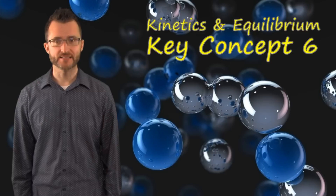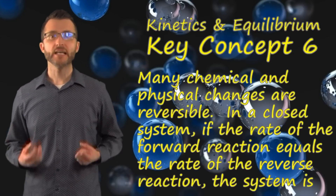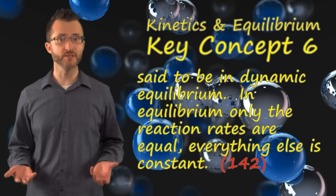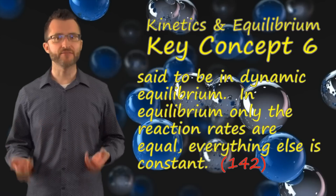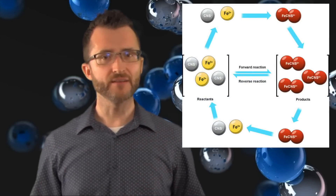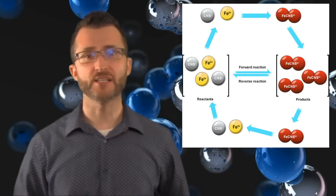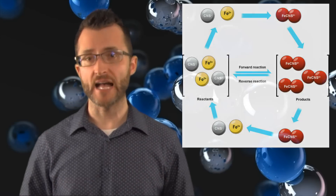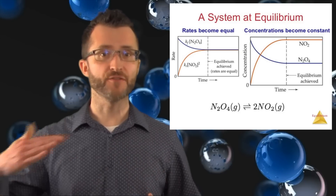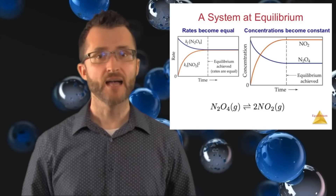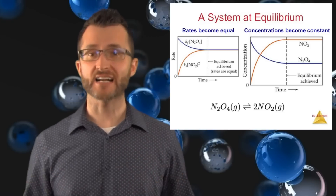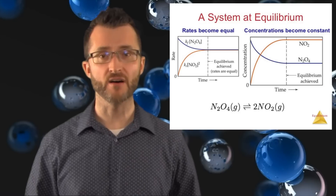Kinetics in Equilibrium, Key Concept 6. Many chemical and physical changes are reversible. In a closed system, if the rate of the forward reaction equals the rate of the reverse reaction, the system is said to be in dynamic equilibrium. In equilibrium, only the reaction rates are equal — everything else is constant. Many reactions can go in the reverse direction as well; when both are occurring, we can achieve equilibrium. Always look for a double arrow in your equation to indicate equilibrium. At equilibrium, the rates of the forward and reverse reactions are equal, but the concentrations of reactants and products are not necessarily equal — instead, they are constant and should not be seen changing.